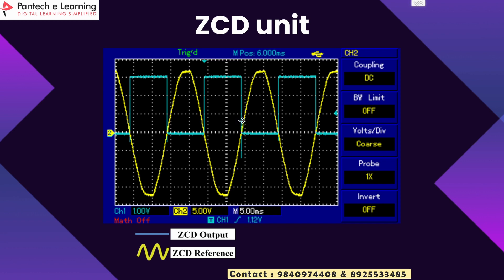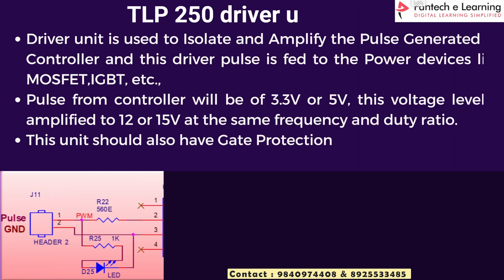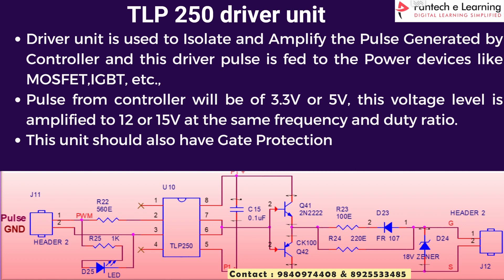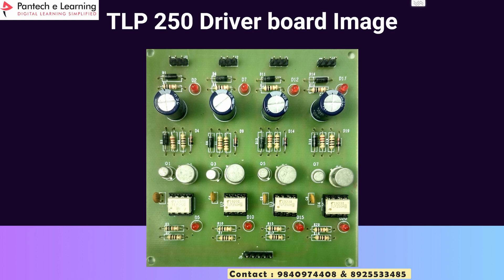You can purchase the ZCD unit separately by contacting us. The TLP250 driver board is mainly used to isolate and amplify the pulse which is generated by the controller. From the controller the voltage generated is up to 3.3 to 5 volt, which is not enough to control the MOSFET switches. For that we are using the TLP250 driver unit, which will amplify the pulse given from the controller up to 12 to 15 volt without any change in frequency or duty ratio. This TLP250 unit also has gate protection. This is the circuit diagram for the TLP250 driver unit.